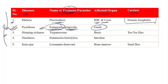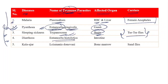Number three: Sleeping sickness is caused because of Trypanosoma, which is a kind of protozoa that affects the brain. The carrier is the Tsetse fly. Number four: Diarrhea is caused because of Entamoeba histolytica, which is a kind of protozoa, and it affects the intestine.